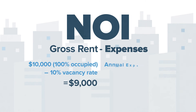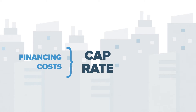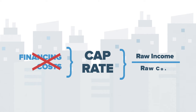Our next step is to subtract the annual expenses. This includes all anticipated items that will drain your bank account each year — things like property taxes, insurance, utilities, maintenance and repairs, property management, HOA dues, and so on. One expense that's not included when calculating the cap rate is financing costs, such as a mortgage principal and interest payment. Cap rates do not include loans or leverage in any capacity. They analyze the raw income over the raw cost of a property, because this number is not affected by the financing terms of the deal.